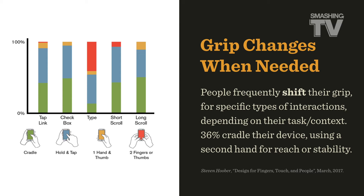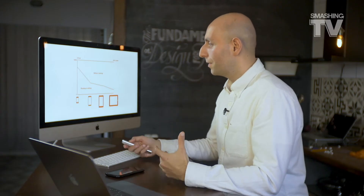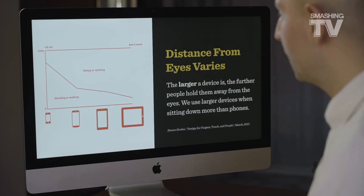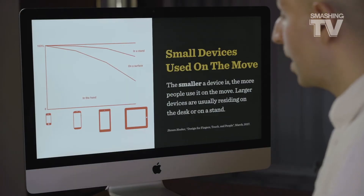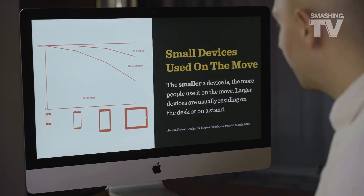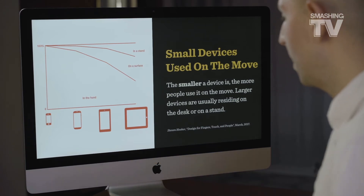According to research by Steven Hoover, 36% will cradle the device using a second hand for reach or stability. We also need to consider whether people stand or walk, and how far they hold the device from their eyes — because distance varies significantly. The larger the device, the further people hold it. We use larger devices more when sitting down, while phones are used on the go. The smaller the device, the more likely people are to use it while moving.